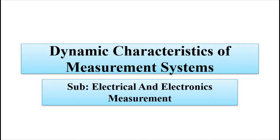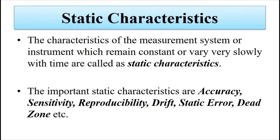The static parameters we covered include linearity, sensitivity, drift, precision, repeatability, and reproducibility. All of these represent the parameters associated with a measurement system which change very slowly with respect to time, or they remain constant.